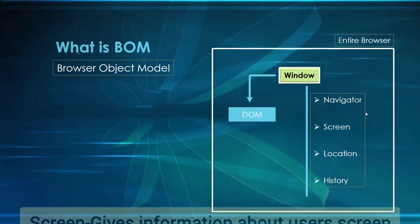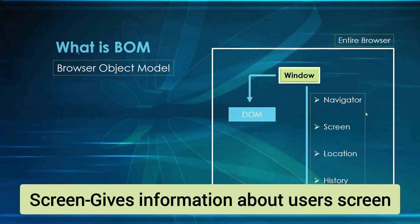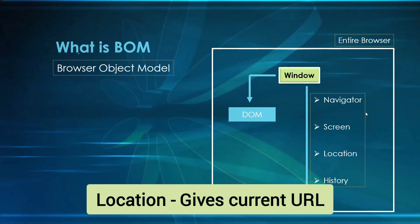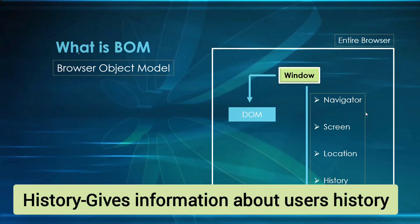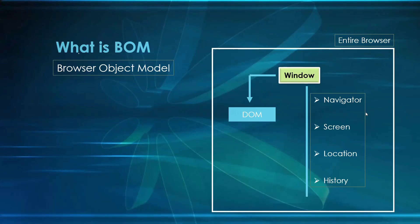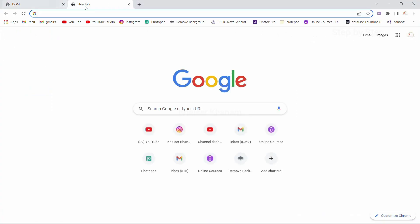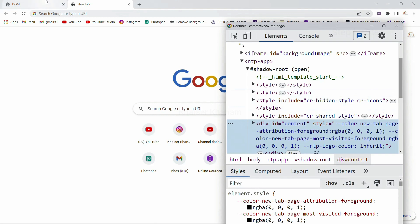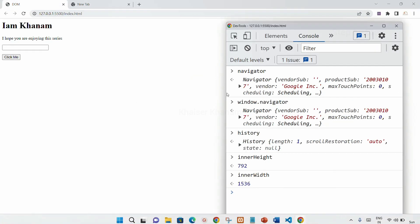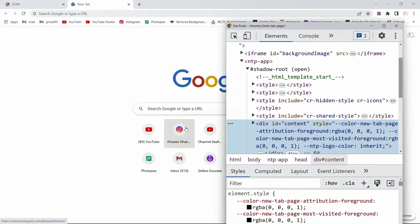Screen will be giving me information regarding the user's screen — whatever screen you have opened, it is going to give me information regarding that. Location will be giving me the current URL, whichever location I am at. History will be giving information regarding the user's history. Each browser tab will have a different window instance. If you have opened two window tabs, this is a separate window instance and each will have a separate document, due to which we cannot share each other's objects — both will be treated as different objects.